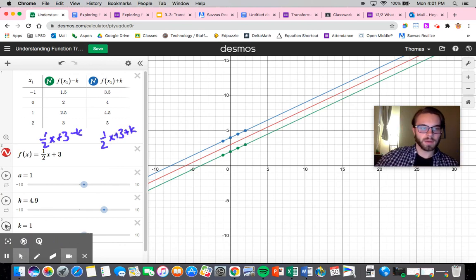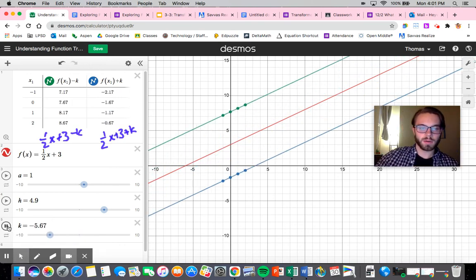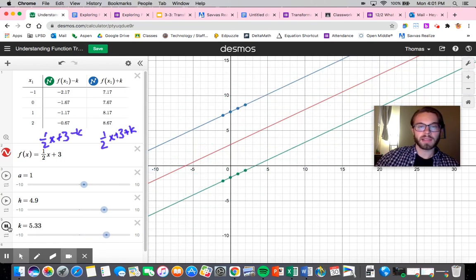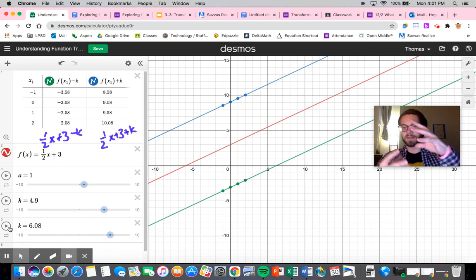So as you can tell, if I were to increase it, it gets further and further apart. This one's shifting further up. This one's shifting further down. So when you have it on the outside, we call this a vertical translation or vertical transformation, and it's being shifted if it's plus, up, and if it's minus, down. So it's a vertical shift up k, and a vertical shift down k.